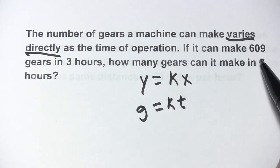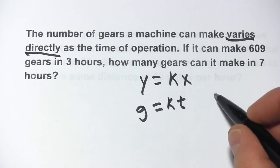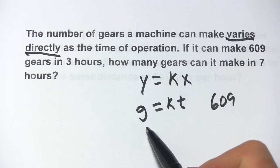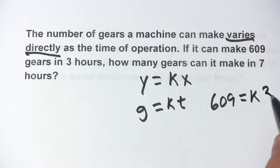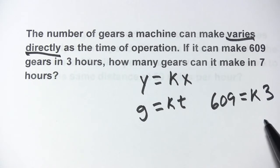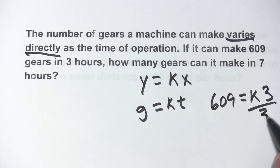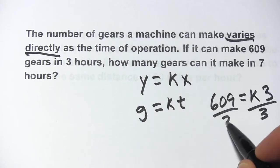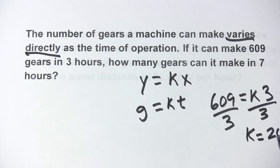It says if it can make 609 gears in three hours. So 609 is the number of gears that it makes in three hours. We have a formula now that we can use to solve for k. So let's divide by three to solve for k, and we get k equals 203.